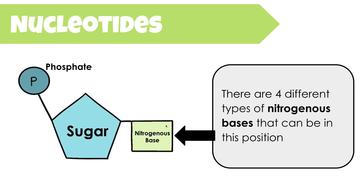The nucleotides that make up DNA and RNA have a three-part structure. They both have a sugar — the sugars will differ whether it's RNA or DNA. Off the sugar is a phosphate group, and then off the other side of the sugar is the nitrogenous base position. Whether it's DNA or RNA will determine which nitrogenous bases occupy that position.